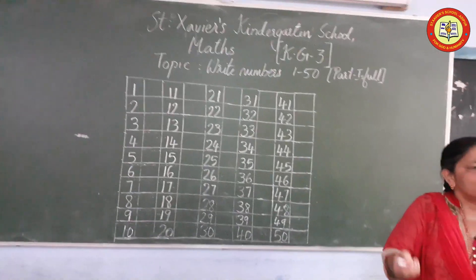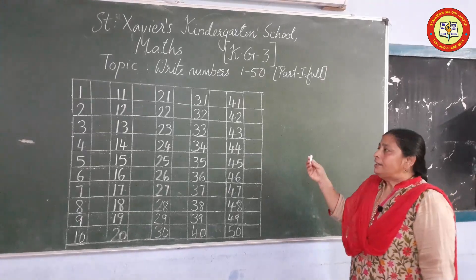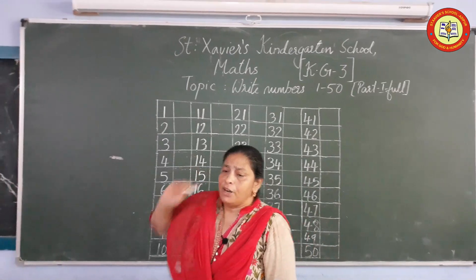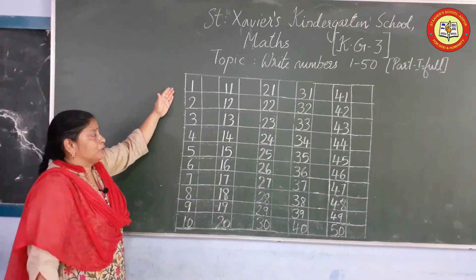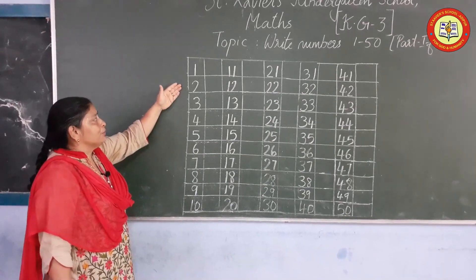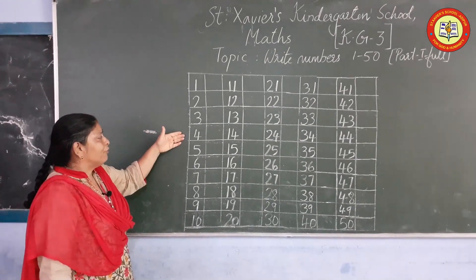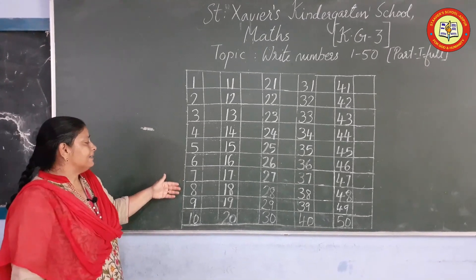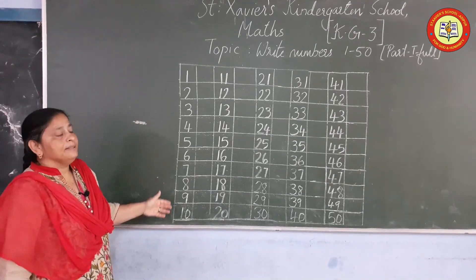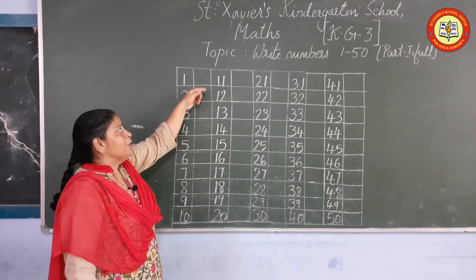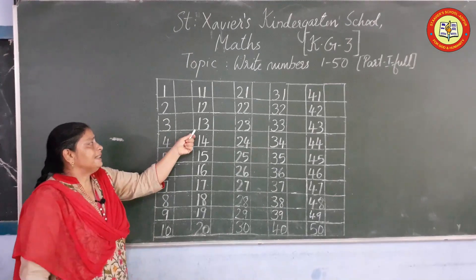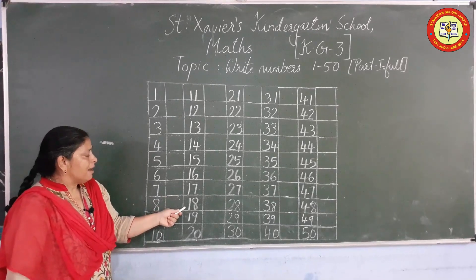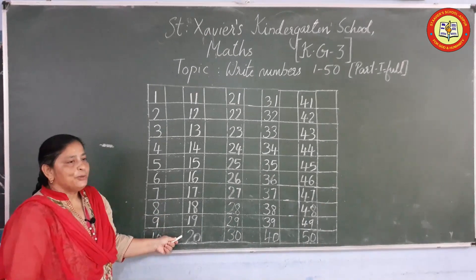Have you all finished writing up to 50? Okay. Now once more I repeat numbers 1 to 50 — repeat after me students. 1, 2, 3, 4, 5, 6, 7, 8, 9, 10, 11, 12, 13, 14, 15, 16, 17, 18, 19, 20.